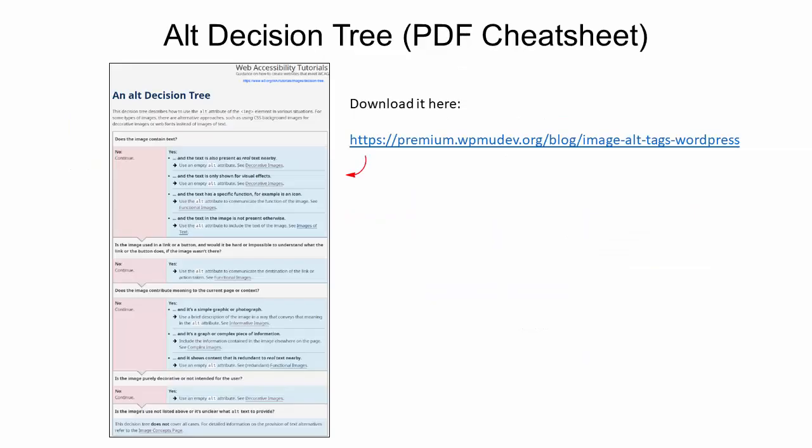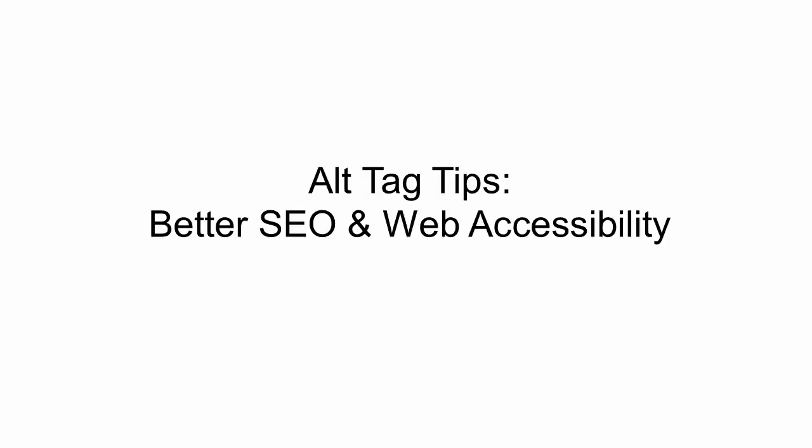To help you come up with the right alt tags for different images, we've put together a tutorial and a cheat sheet that you can download from our site. Now that we've looked at the different types of images you can add to your content in WordPress, I'd like to give you some alt tag tips for better SEO and web accessibility.